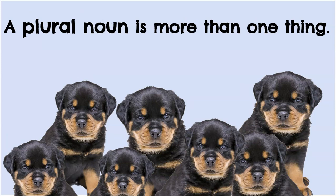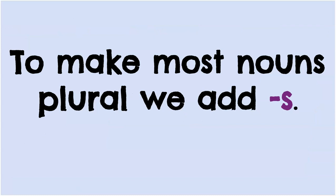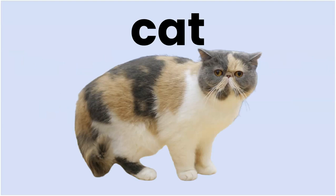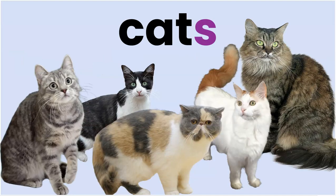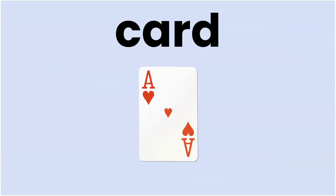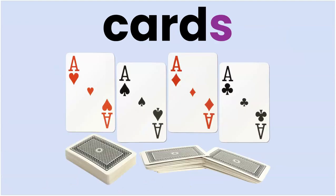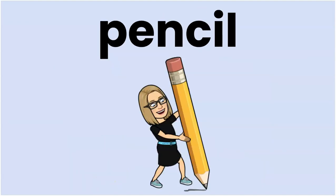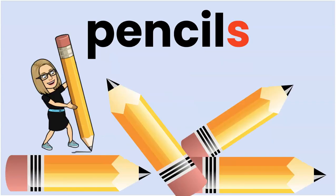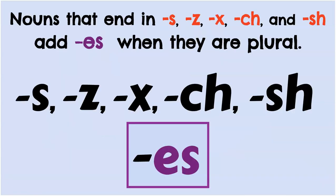Now we've got the basics. To make most nouns plural, we add S. Cat adds an S to become cats. Card becomes cards. Pencil becomes pencils. Nouns that end in S, Z, X, CH, and SH add ES when they are plural.